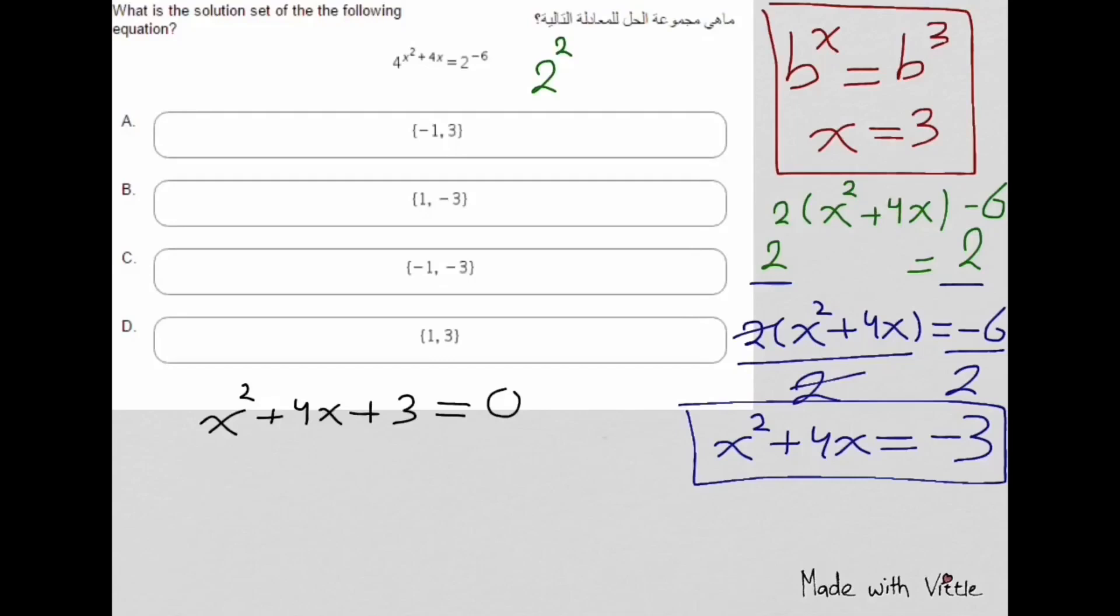Now we'll factor this equation. We already know that two numbers whose product is 3 and whose sum is 4 are 1 and 3. 1 times 3 is 3, and 1 plus 3 is 4. So we'll write it as x plus 1 times x plus 3, which equals 0.